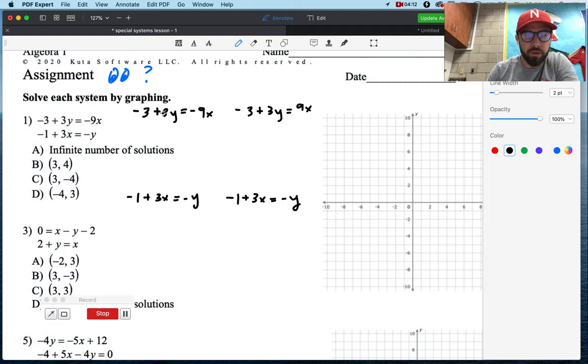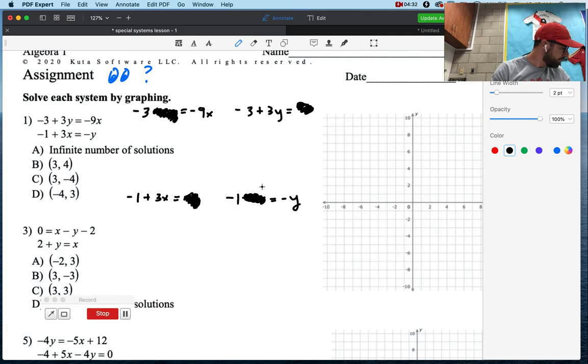Now, we're going to write the second one down here twice. Negative 1 plus 3x equals negative y. Negative 1 plus 3x equals negative y. And I told you, if you ever look at the problem, and you get spooked, we're using the intercepts method. And the intercepts method is this. It says, hey, for this guy, we're going to cross out y.